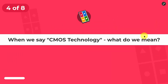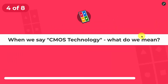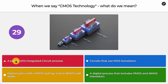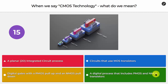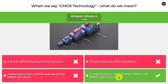Question four: when we say CMOS technology, what do we mean? Options are: a planar two-dimensional integrated circuit process; circuits that use MOS transistors; digital gates with a PMOS pull-up and an NMOS pull-down; or a digital process that includes both NMOS and PMOS transistors. This one is tricky, but the answer is the last one.